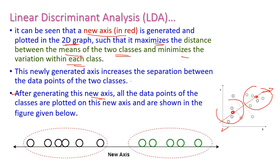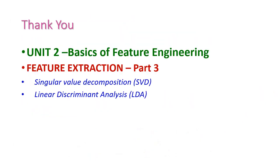After generating this new axis, all the data points of each class are plotted on this new axis only. Everything is projected onto this new axis, as shown in the figure below. We can now easily classify the data with two clearly different classes. So far, we have seen singular value decomposition and linear discriminant analysis from feature extraction — this is the third part of feature extraction from the second unit. In the next class, we will see another important topic from the second unit. Thank you.